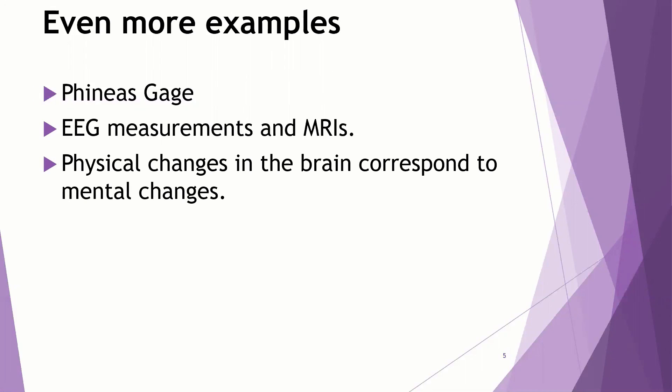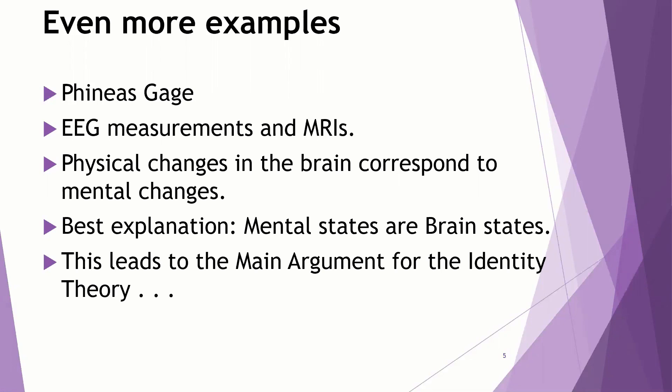There are physical changes in the brain that correspond to mental changes. All of these things we've mentioned indicate this. And so what's the best explanation of this? The best explanation is that mental states just are brain states, that the mind is identical to the brain. And so this leads us to that main argument that I promised you for the identity theory. This is the big picture argument.